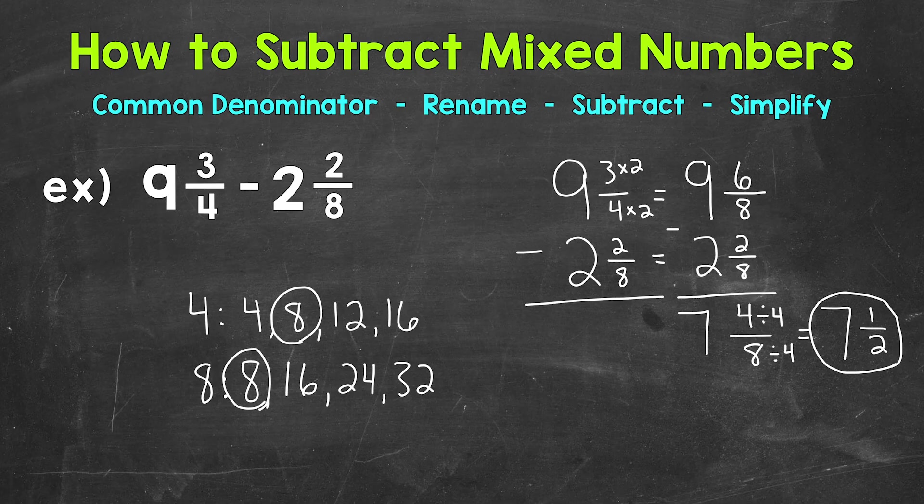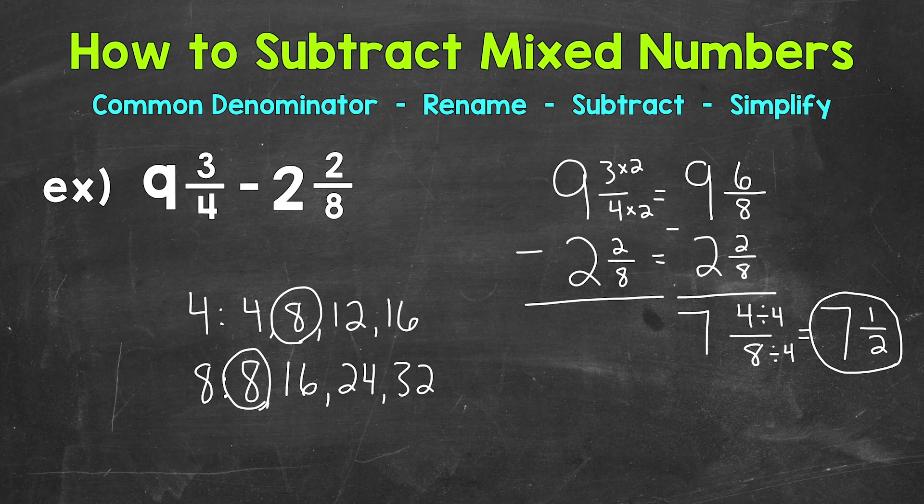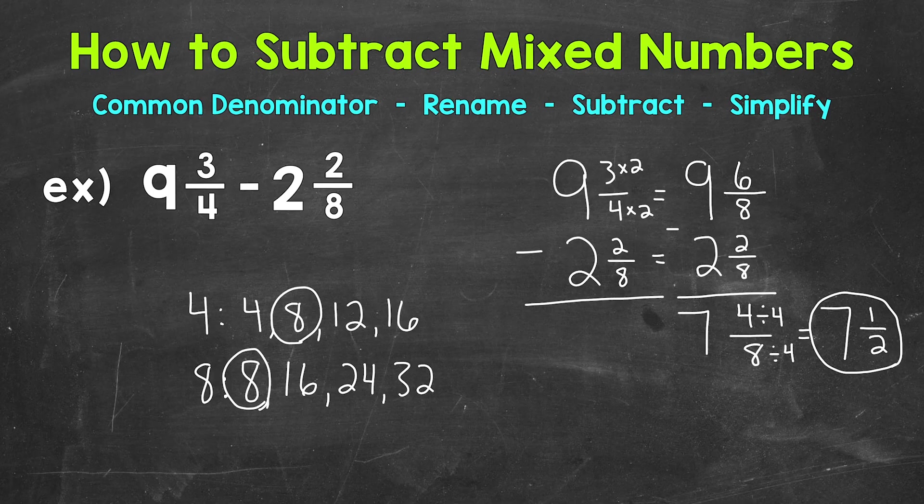So to recap, we found our common denominator, which was 8. Then we renamed the fractions that we needed to rename, so we have a common denominator of 8. Then we subtracted our fractions, and then whole numbers. We got 7 and 4 eighths, which is our final answer, but we were able to simplify, and our final simplified answer was 7 and a half.